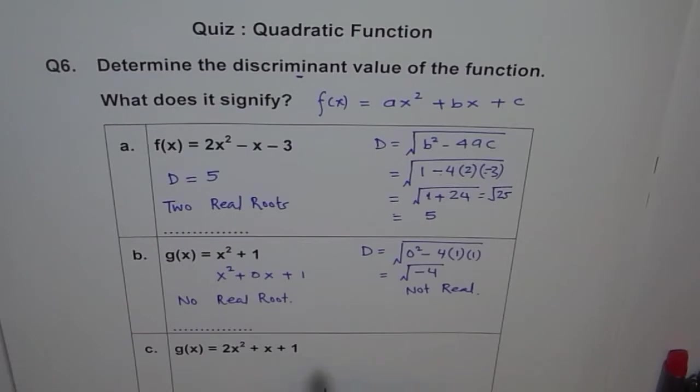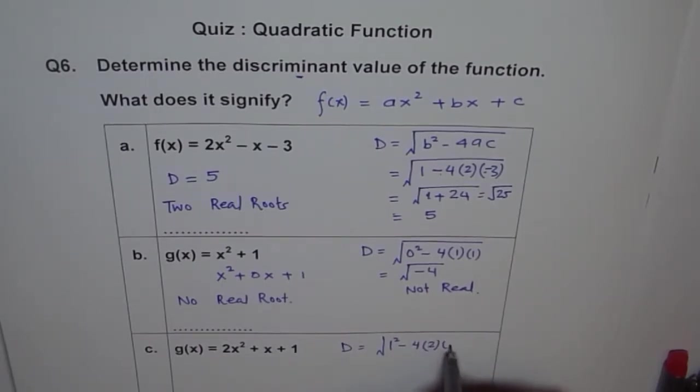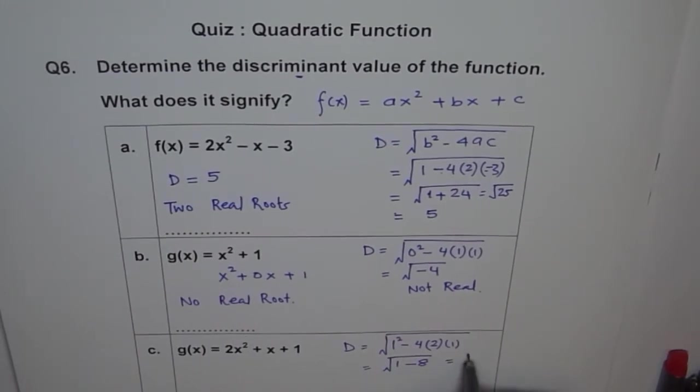How about this one? For part C, b = 1, so we have 1² - 4 times a is 2 and c is 1. We get √(1 - 8) = √(-7). This is also not real.